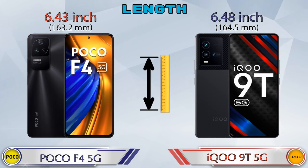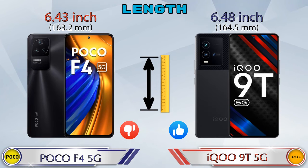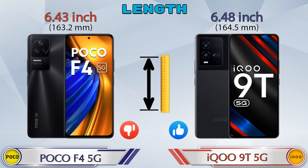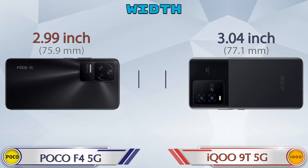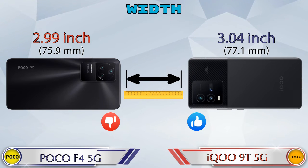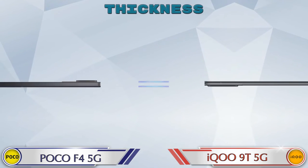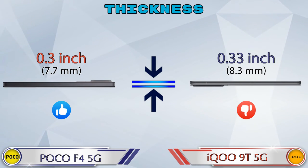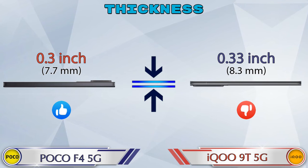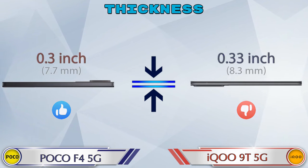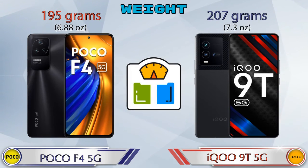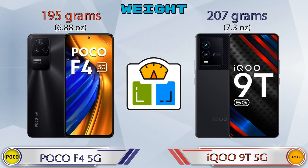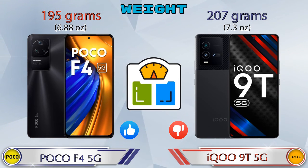Now let's check the dimensions. The length of the F4 5G is 6.43 inches and the 9 5G is 6.48 inches. Width: the F4 5G is 2.99 inches and the 9 5G is 3.04 inches. Thickness: the F4 5G is 0.3 inches and the 9 5G is 0.33 inches, making it slightly thicker. Weight: the F4 5G is 195 grams and the 9 5G is 207 grams, which is heavier.